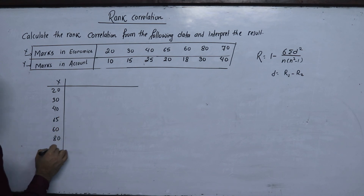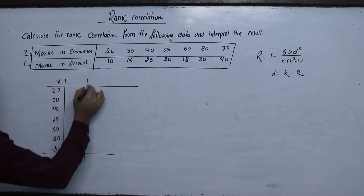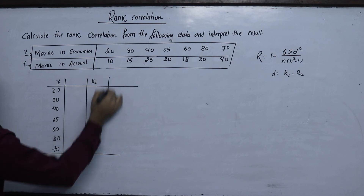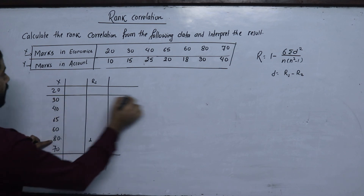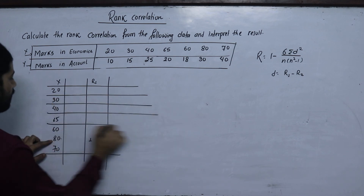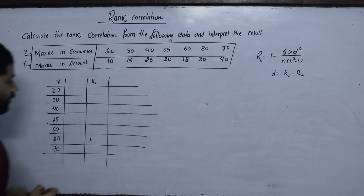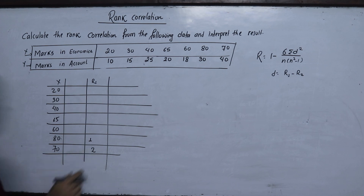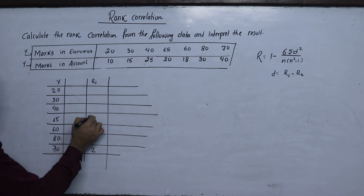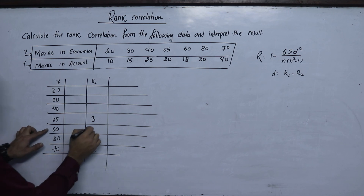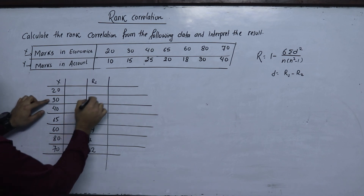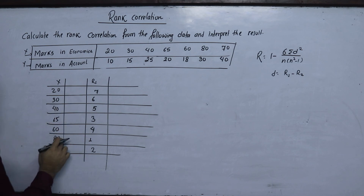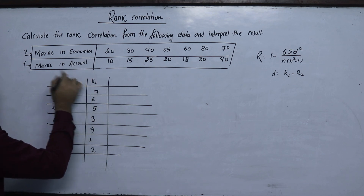The ranking starts at 70 — this rank is R1. We assign rank 1 for the highest value. The 2nd rank is 70, the 3rd is 65, the 4th is 60, and so on through the 5th, 6th, and 7th data points. So I can get the X ranking. Now for Y marks: